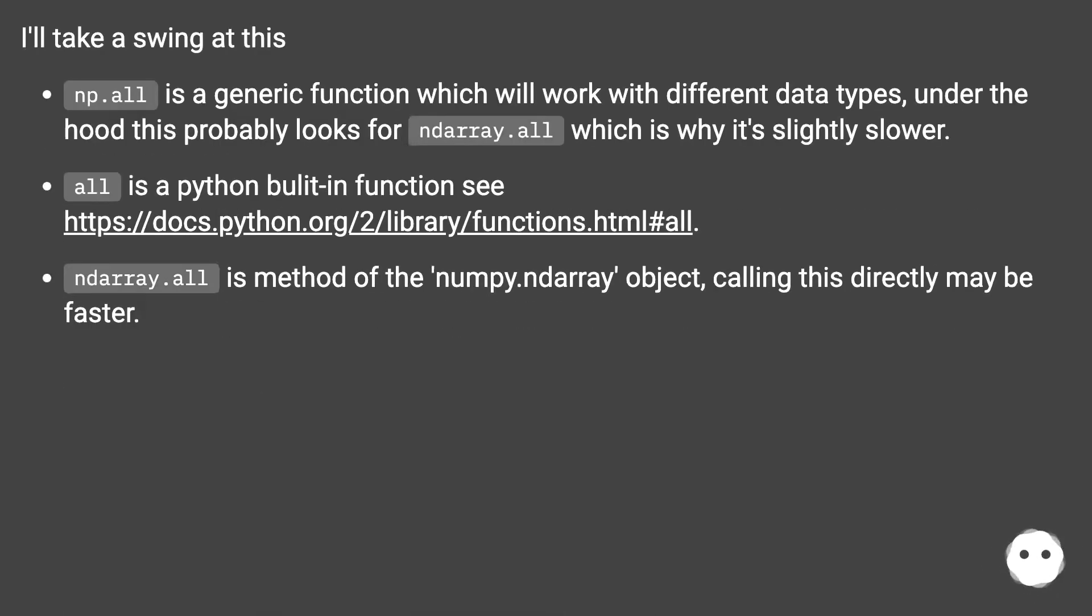I'll take a swing at this. np.all is a generic function which will work with different data types, under the hood this probably looks for ndarray.all which is why it's slightly slower.